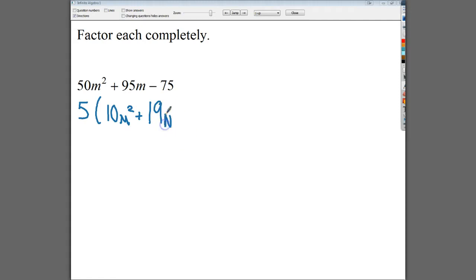So five times 10 N squared, 95 divided by five is 19 M. And that was maybe the worst M I'd written in a very long time. And that's saying something. And then minus 15. There's no common factor there. So the five kind of sits on the outside until we're ready for it.